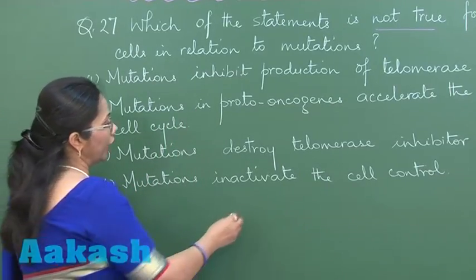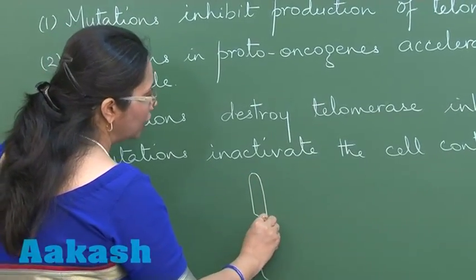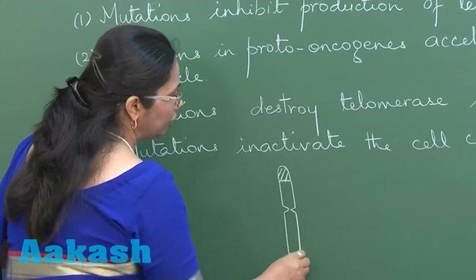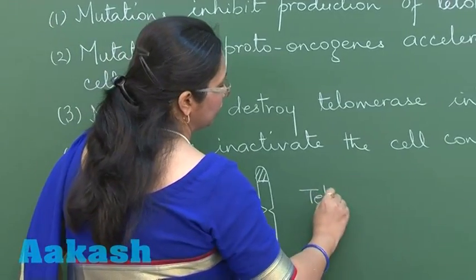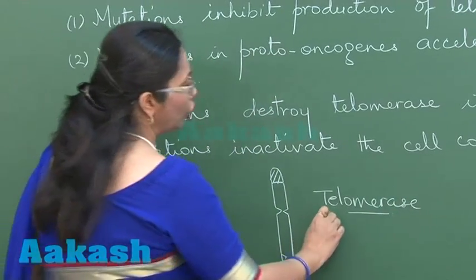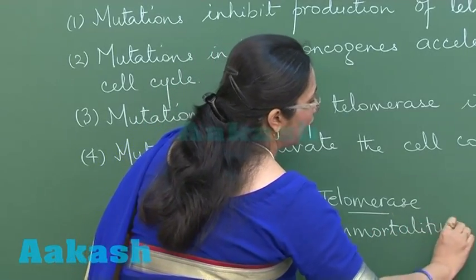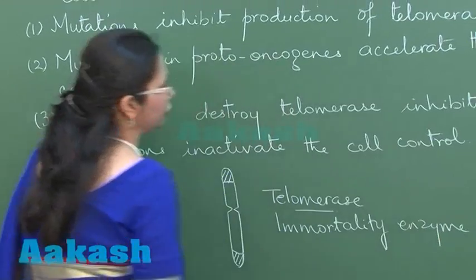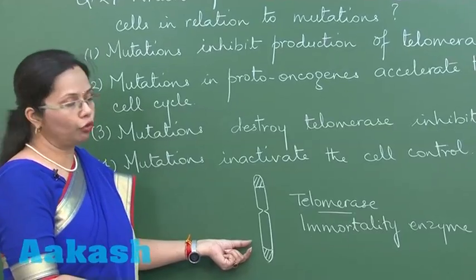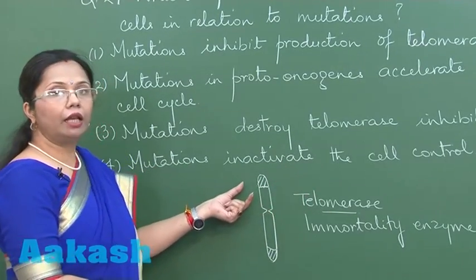In any chromosome, the ends are called the telomeres, and these are replicated by an enzyme called telomerase. This enzyme is also called the immortality enzyme because as long as this enzyme remains active, the cells will continue to divide, since it maintains the telomeric ends of the chromosome. As the activity of telomerase starts declining, the cell starts declining.